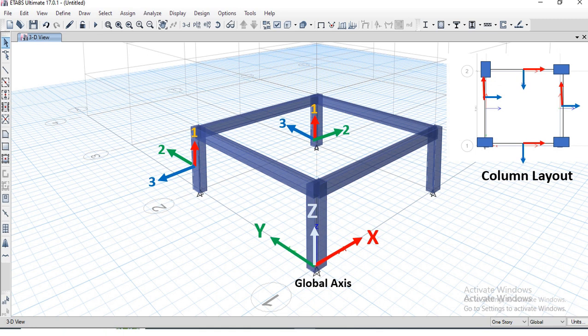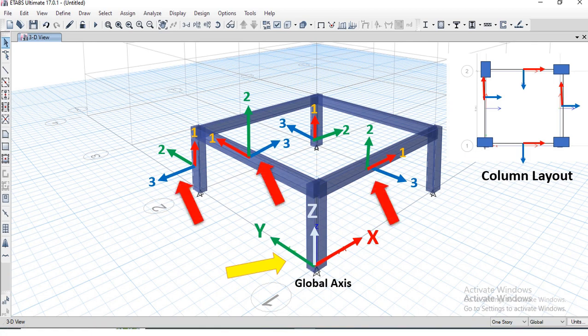Similar is the case for beams. Local 1 along length, local 2 along larger dimension that is depth, and local 3 along smaller dimension, width. We can conclude an entire system has a common global axis and each component of system will have their own local axis.